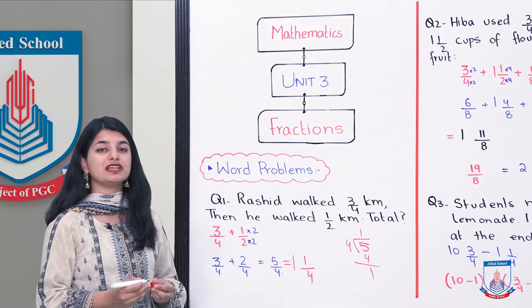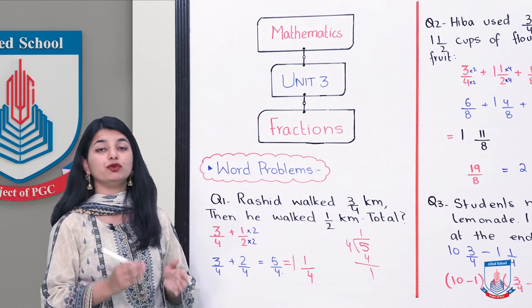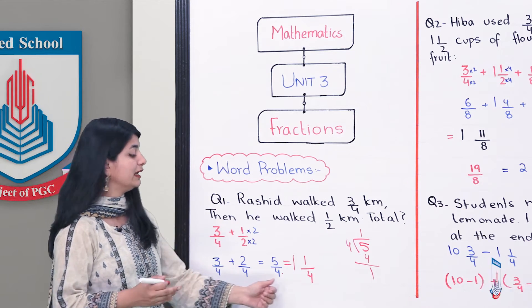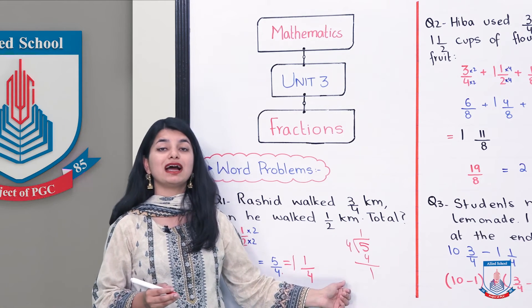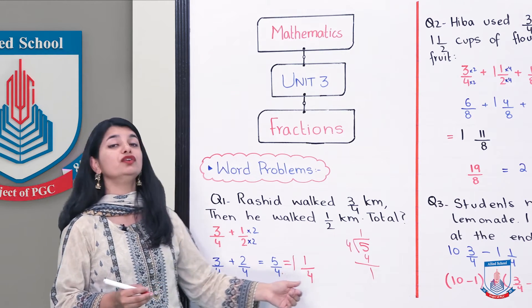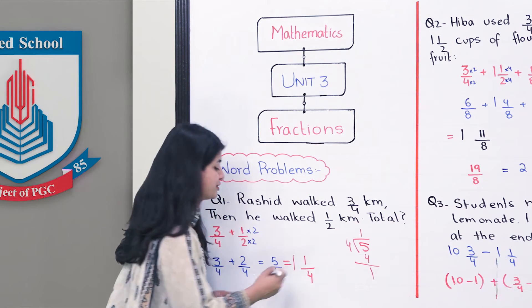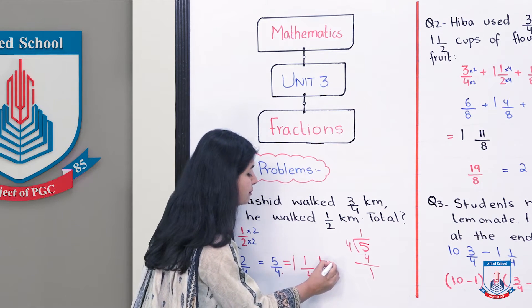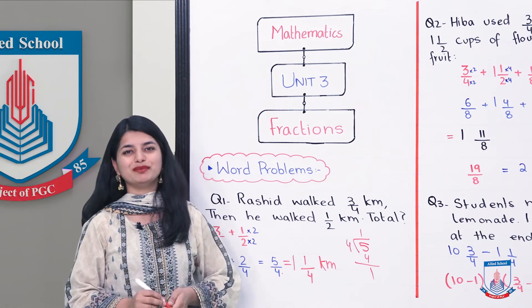You have to make the same denominator for the total length that he walked. You will write, Rashid walked a total of 1 whole 1 by 4 kilometers. So, that's it for question number 1. Let's look at question number 2 now.